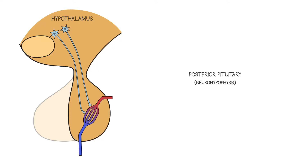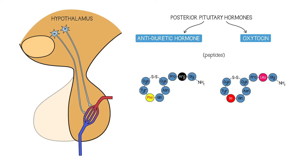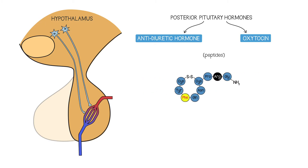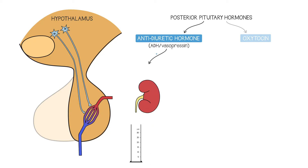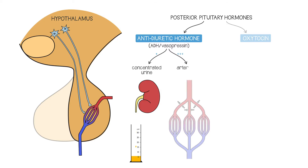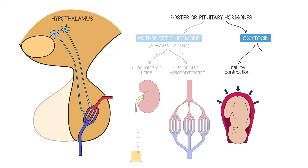The two hormones released from the posterior pituitary of humans include antidiuretic hormone and oxytocin. Both are peptide hormones nine amino acids long, and they're closely related in structure. Antidiuretic hormone, also known as ADH and vasopressin, works on the kidney to make it produce concentrated urine, and in high concentrations ADH causes vasoconstriction of arterioles. Oxytocin promotes contraction of the uterus in childbirth and later promotes milk release when the baby is breastfeeding.